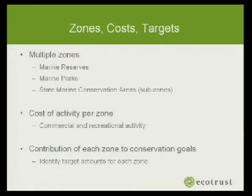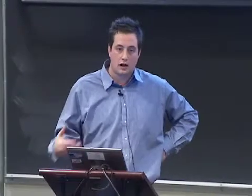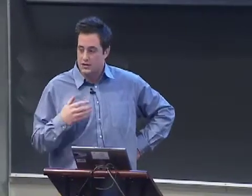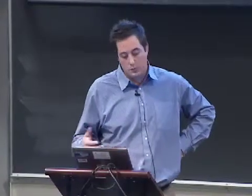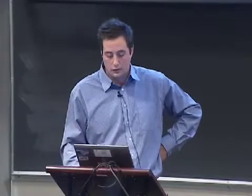Once you define your zones, you can define what type of activity can occur in those zones, and based on that you can specify what type of cost is going to be associated with each zone. You can also specify targets per zone — either zone-specific targets like a certain amount in a reserve and a certain amount in a park, or you can just have targets fall out into any of those zones.